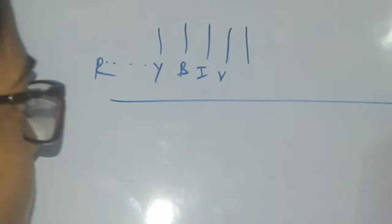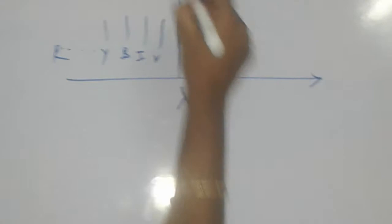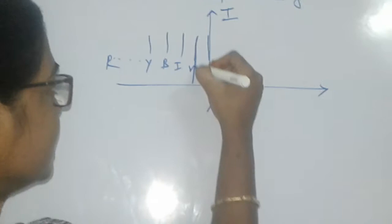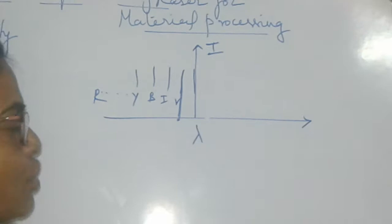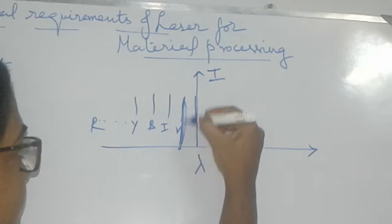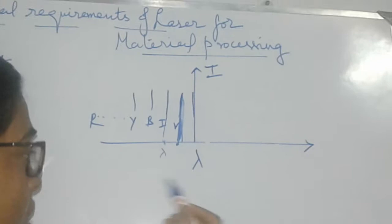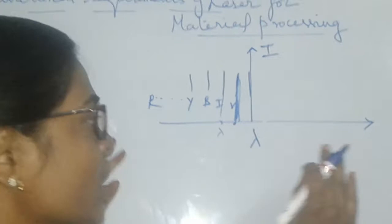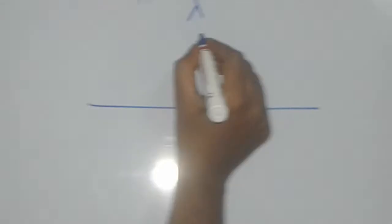On the spectral distribution graph, the X-axis indicates wavelength and the Y-axis indicates intensity or power. This bright violet line is part of what we call the spectral distribution of any kind of light source.